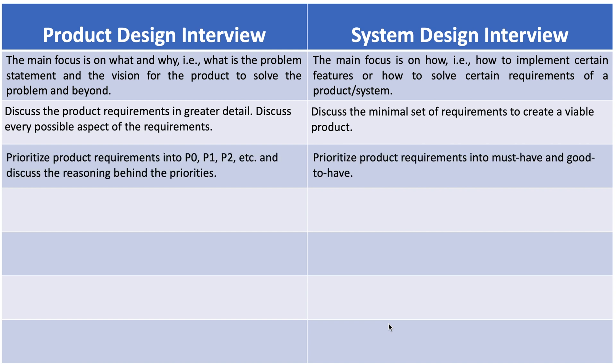In a product design interview, the candidate is supposed to prioritize requirements into different phases — P0, P1, P2, etc. — and discuss the reasoning behind those priorities. Whereas in a system design interview, the candidate prioritizes requirements into must-have and good-to-have. Must-have requirements are what the candidate must solve in the interview, while good-to-have requirements are not the main focus.